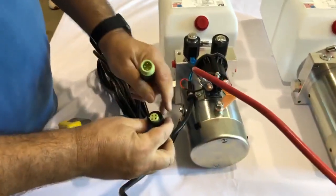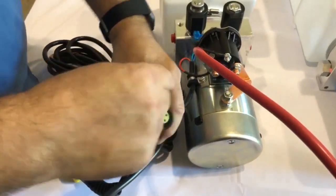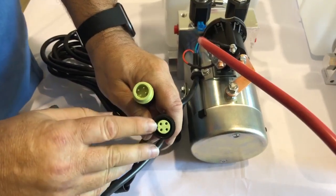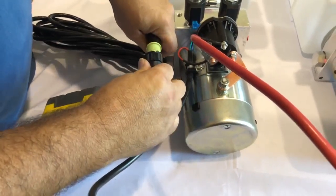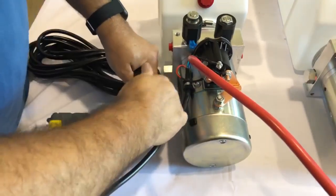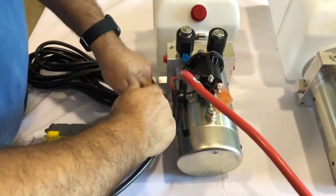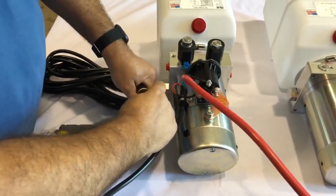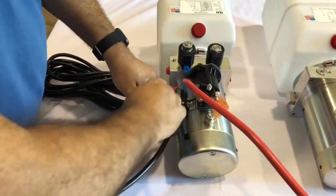And now here I'm connecting the hand controller and you'll notice there is a key and a key slot, so make sure to line those up. I like to give the connectors a little push together as I'm screwing the threaded cover in place.